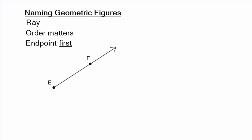And we're going to name it with the endpoint first. The order does matter. So this could be called ray EF, but you can't call it anything else. You could use the ray symbol and it always goes to the right. You have to do it that way. You're not going to ever point it to the left. And again, the endpoint is going to be first.